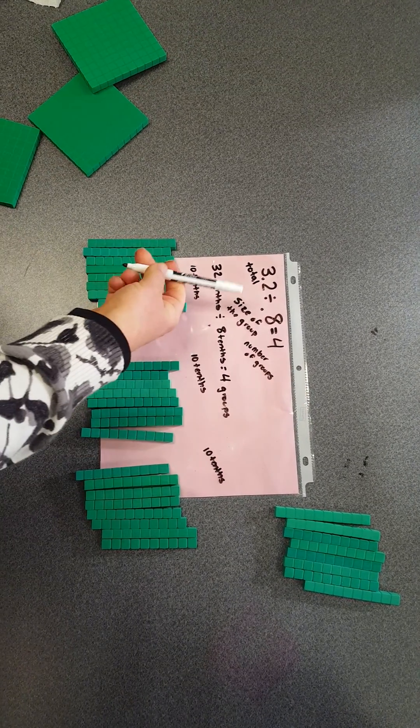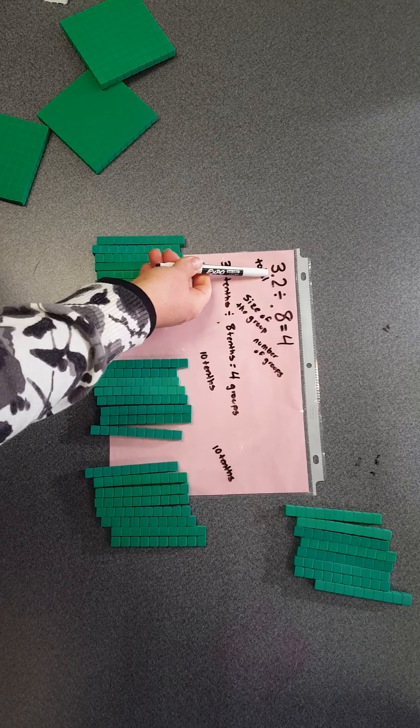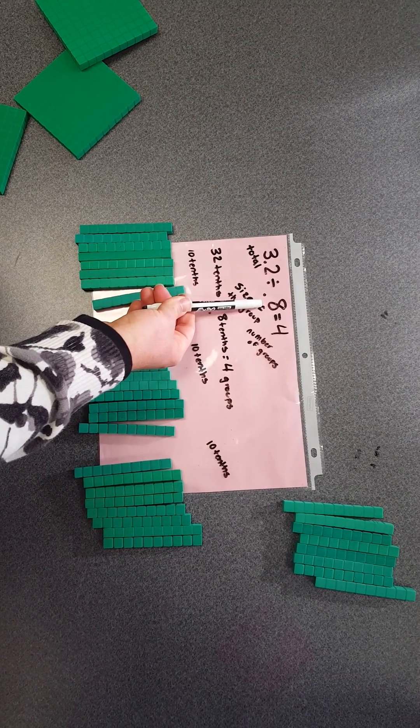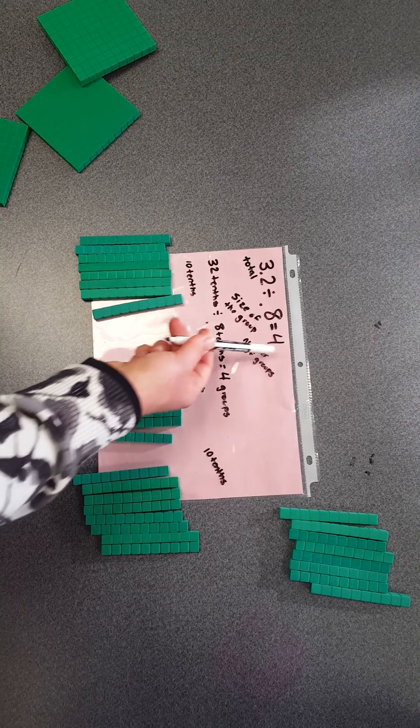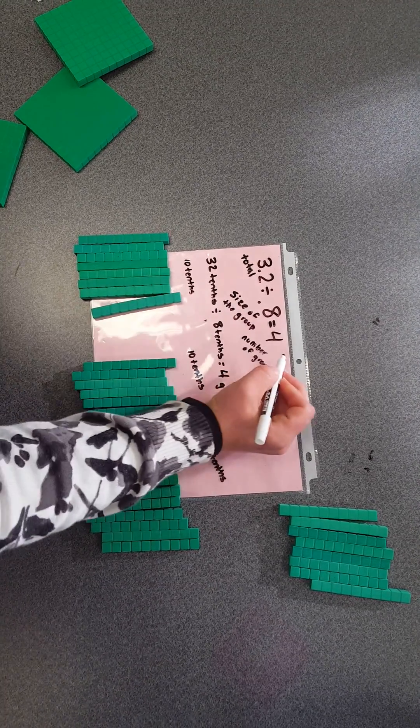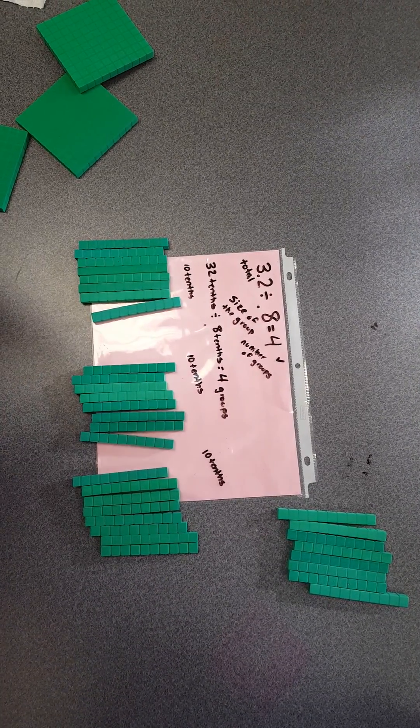If I use reasoning and estimation, this is close to 3, that number is close to one whole. 3 divided by 1 is going to be close to 3. 4 is close to 3, so I know that I can check my work using estimation.